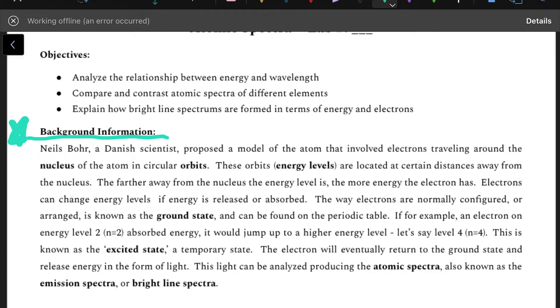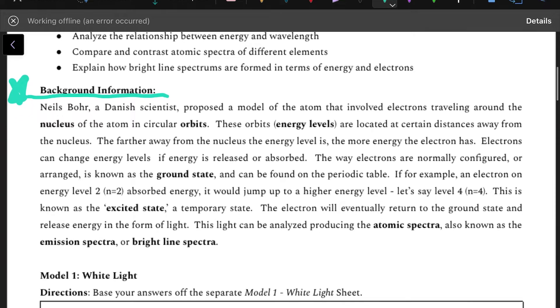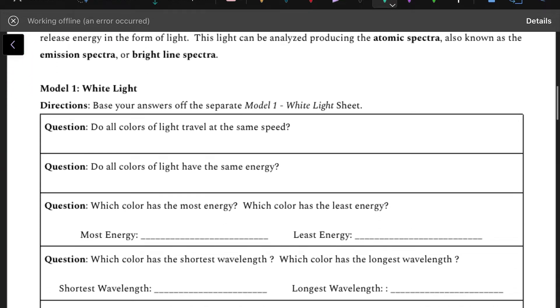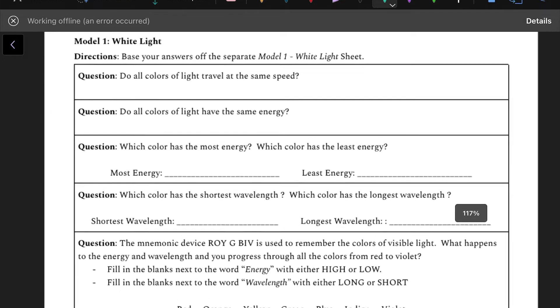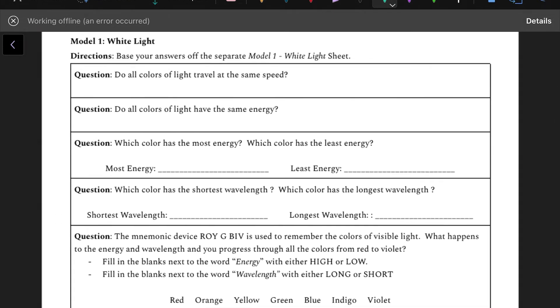which is also known as the emission spectra, which is also known as the bright line spectra, how that is formed. So background info is full of a lot of useful information to help you out. Now the rest of the lab is based on some different diagrams that you will have access to. At each lab station, you will find three laminated color-coded sheets that will help you with these questions.